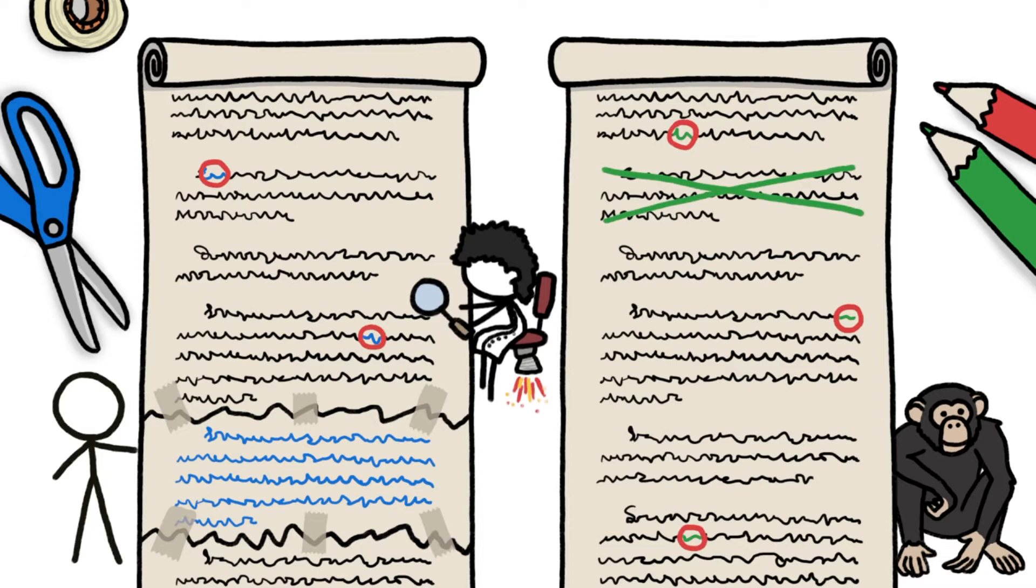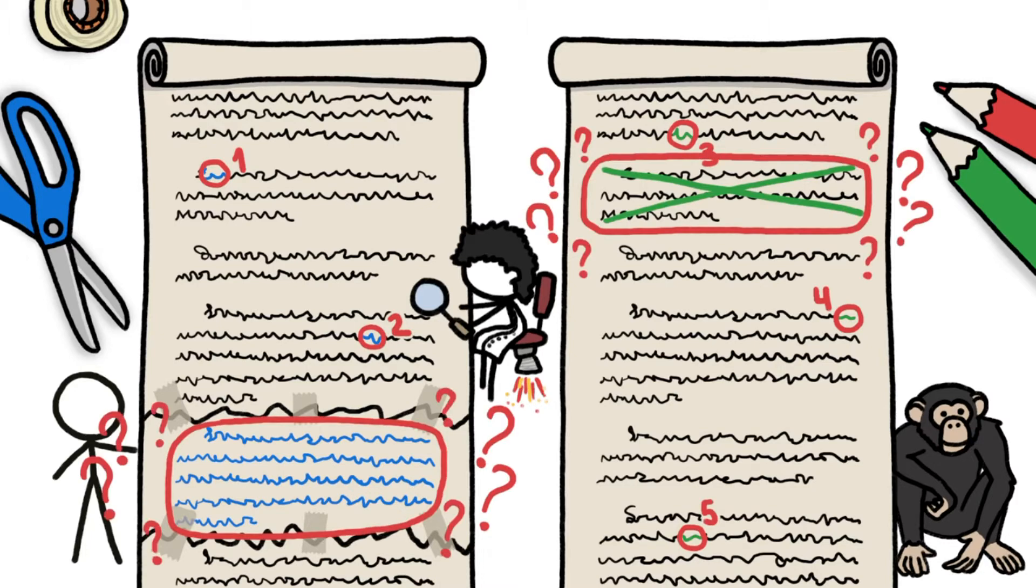When researchers sat down to compare the chimp and human genomes, those single letter differences were easy to tally, but the big mismatch sections weren't.